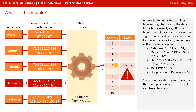Here we've used the same hashing function to calculate the hash value for Delaware. Adding all the ASCII values for the characters in 'Delaware' together, we get 805. Performing modulus 10 gives us 5. Since two data items cannot occupy the same position in the hash table, a collision has occurred.